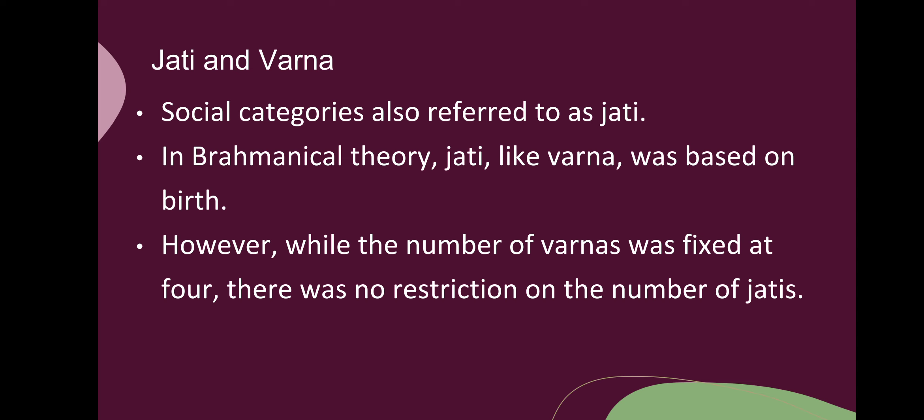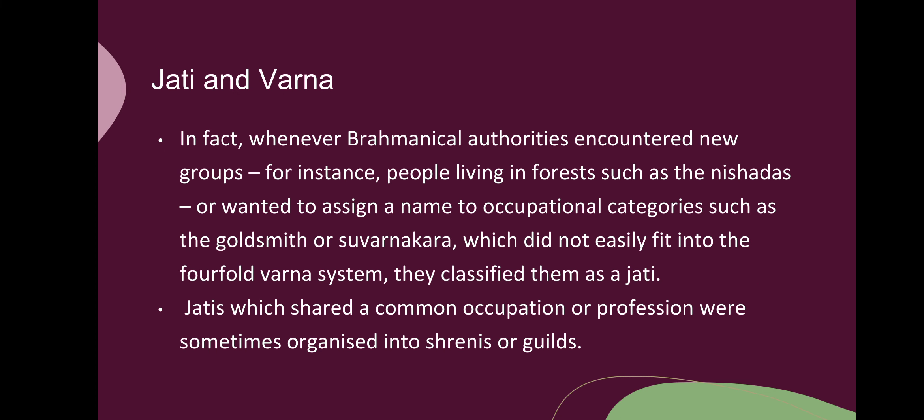There have been several jatis, and even today you find there are several jatis, whereas varnas are fixed: brahman, kshatriya, vaishya and shudra. Whenever brahmanical authorities encountered new groups — for instance, people living in forests such as the nishadas — or wanted to assign a name to occupational categories such as the goldsmith (sunar or swarnakara), which did not easily fit into the fourfold varna system, they classified them as a jati.